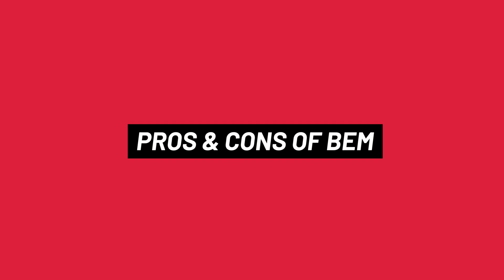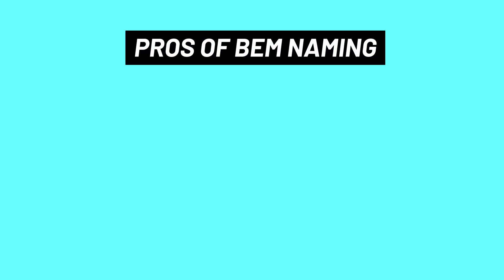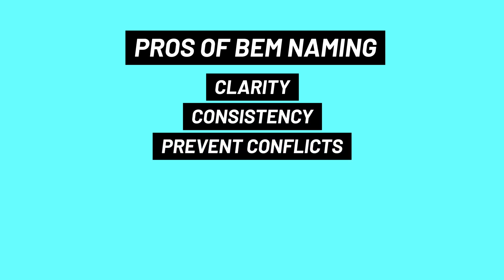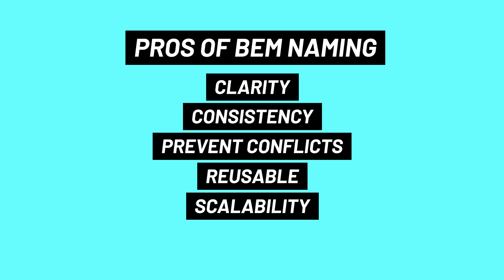Starting with the pros: Clarity — every part of your design has a clear name, so you always know what you're styling. Consistency — following the same rules across your project is much easier. You prevent conflicts — names are specific to blocks and elements, so styles don't accidentally mess up other parts of your site. They're reusable — blocks and elements can be used again without worrying about breaking styles. And scalability — great for large projects with lots of different components.